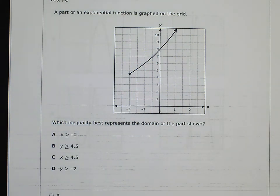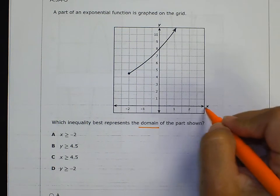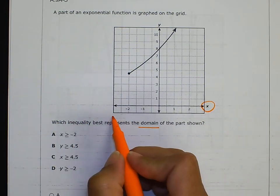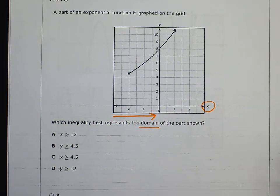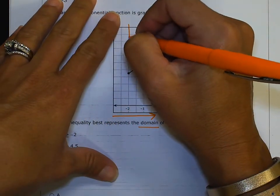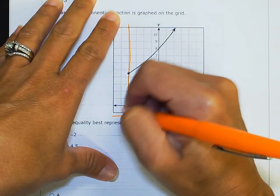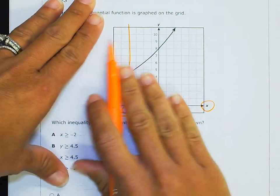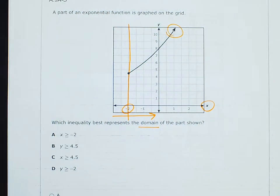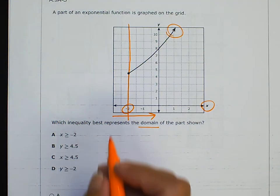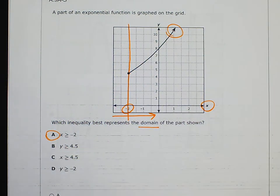Number 18: A part of an exponential function is graphed on the grid. Which inequality best represents the domain of the part shown? Domain is our x's — we move left to right. The first place I see the graph is at x = −2, and it continues on forever. So x is everything greater than or equal to −2.